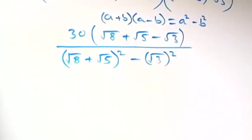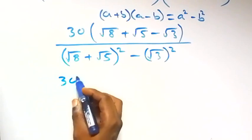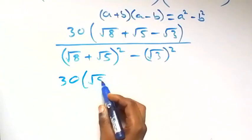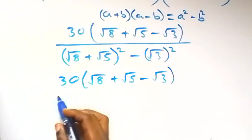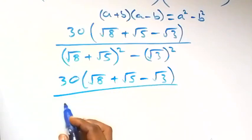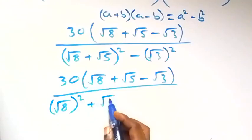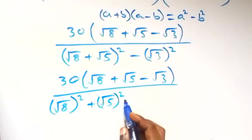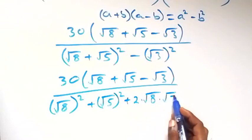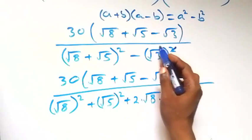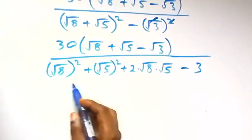From what we have here, let's leave this as 30 into bracket root 8 plus root 5 minus root 3, then divided by the expansion: root 8 squared plus root 5 squared, plus 2 times root 8 times root 5, then here we have the square of root 3 as well, so we have minus 3.